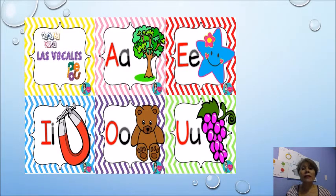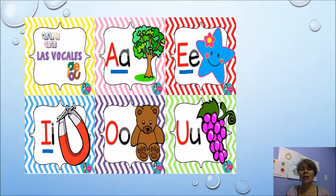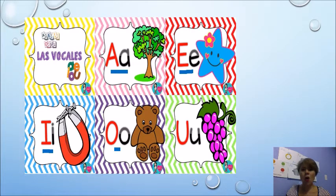Aquí tenemos las vocales. Recordemos que esta es la vocal A de árbol. Aquí tenemos la vocal E de estrella. Aquí abajo tenemos la vocal I — recordemos que la I tiene un sombrerito arriba, y la I mayúscula tiene dos patitas: un sombrerito y unas patitas. Y tenemos el imán. La vocal más gorda es la vocal O de oso.